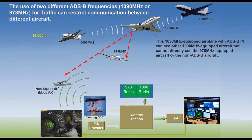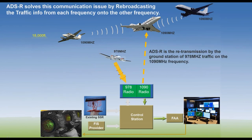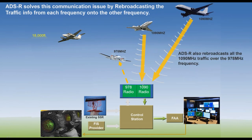The use of two different ADS-B frequencies — 1090 and 978 — can restrict communication between different aircraft. A 1090-equipped airplane with ADS-B in can see other 1090 aircraft, but cannot directly see the 978-equipped aircraft or the non-participating mode C aircraft. ADS-R, the rebroadcast, solves this communication issue by rebroadcasting traffic from each frequency onto the other. So the 978 guy reporting to the ground station has his traffic position rebroadcast on 1090 up to the Citation that has a 1090 receiver. Conversely, two 1090 guys reporting their position — the Baron with a 978 receiver can't see them directly, but they'll still show up on his traffic scope because of ADS-R.